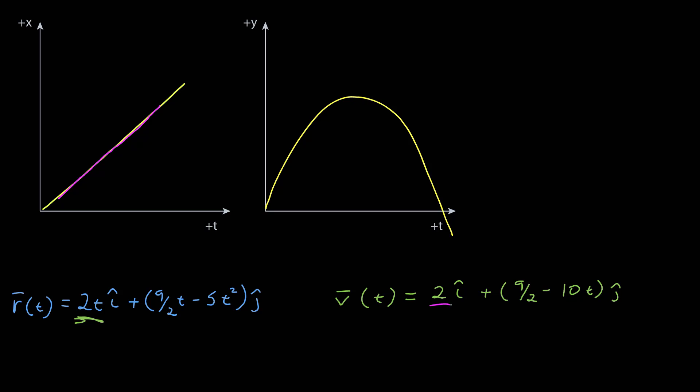Here I have the y component as a function of time, which is an upside-down parabola. And we know that the slope of the tangent line at each point of the curve then gives us the component of the velocity at that point. It starts positive, it goes to 0, and then becomes negative. So analyzing x component versus time and the y component versus time is just like how we analyzed graphs versus time in one dimension.